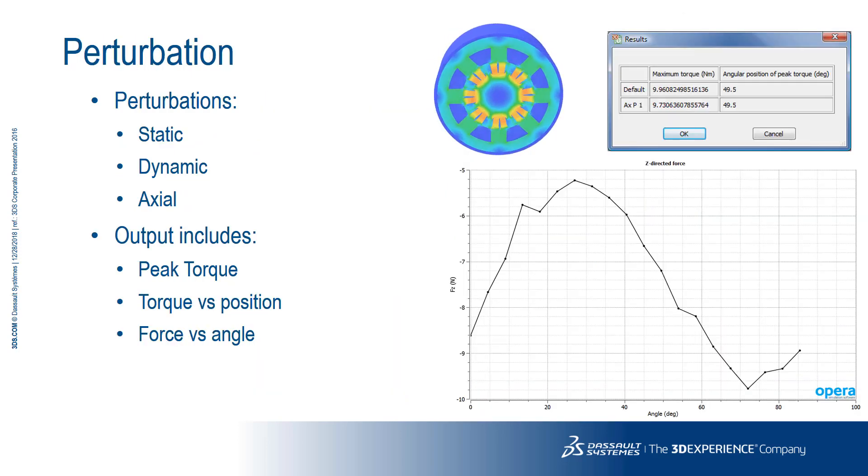The perturbation analysis is an extension to the torque versus angle analysis for modeling various types of rotor eccentricity, described as perturbations, as this is the method used to define the offset. The eccentricity can be static or dynamic, radial or axial. The output includes the value of peak torque, its mechanical angular position, and the torque versus position curve, but also the addition of the forces versus angle.